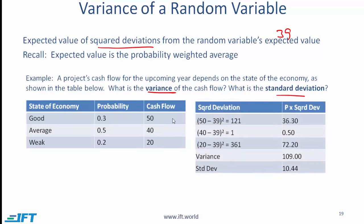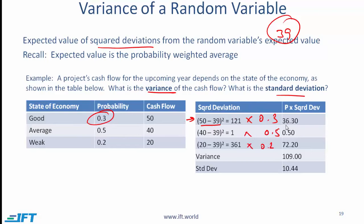We need to find the squared deviation from 39 and then find the expected value of those squared deviations. For the first scenario, cash flow is 50: the squared deviation is (50 minus 39) squared, which is 121. With a cash flow of 40, the squared deviation is 1. With a cash flow of 20, the squared deviation is 361. We then find the expected value of the squared deviations by multiplying each squared deviation by its probability — 0.3, 0.5, and 0.2 respectively. This gives 36.3 for the first term. When you add all three numbers, the variance is 109.